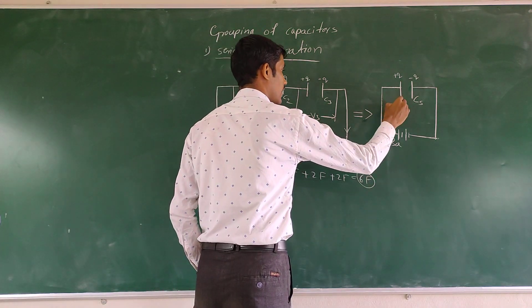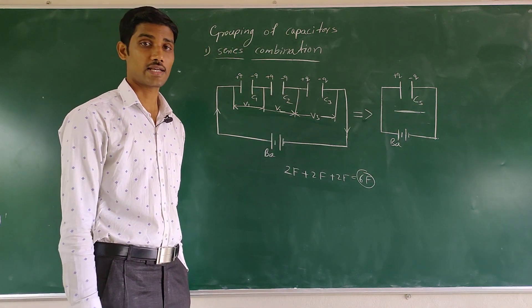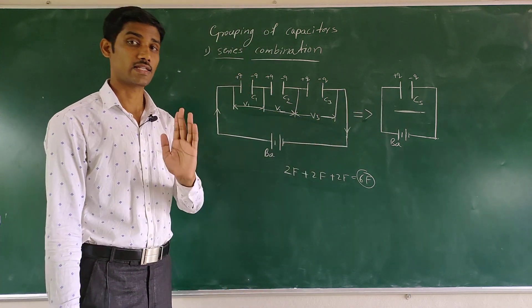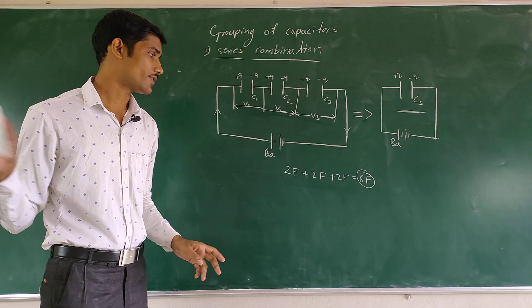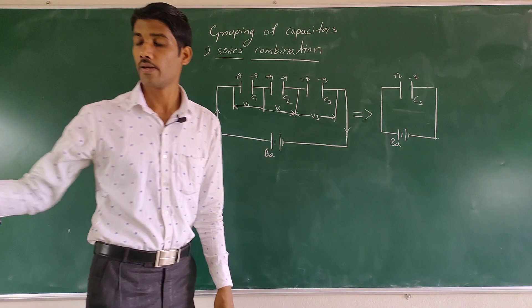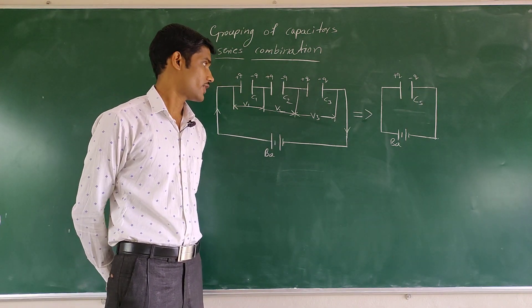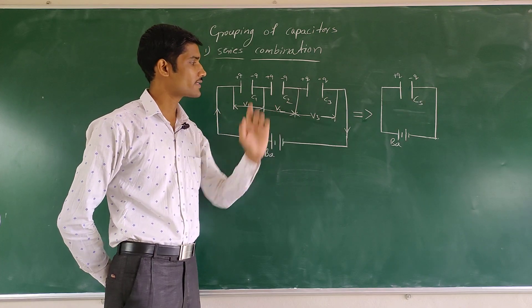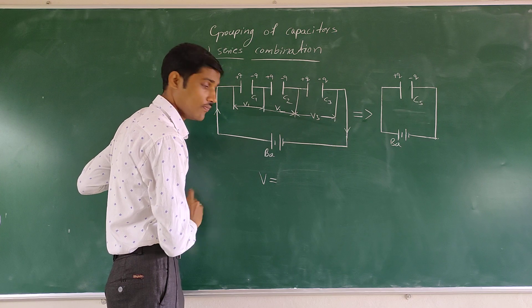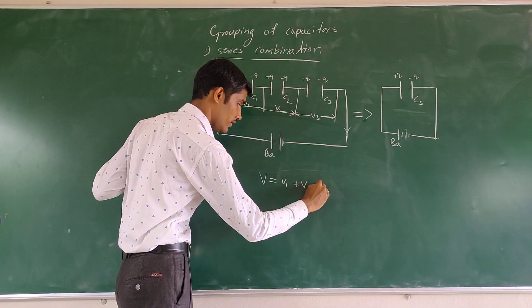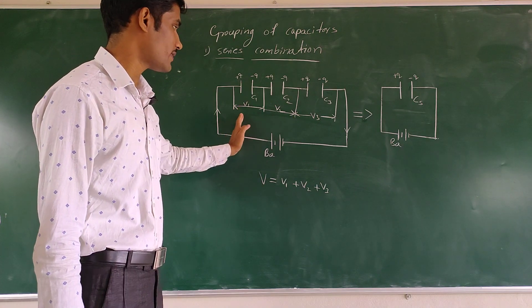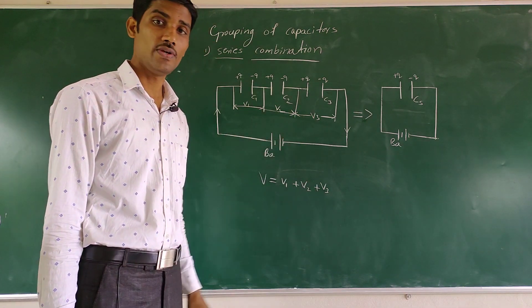These six-farad capacitors together give us six-farad in combination. The equivalent capacitors are combined into one. The potential difference is V equal to V1 plus V2 plus V3 for the three capacitors.